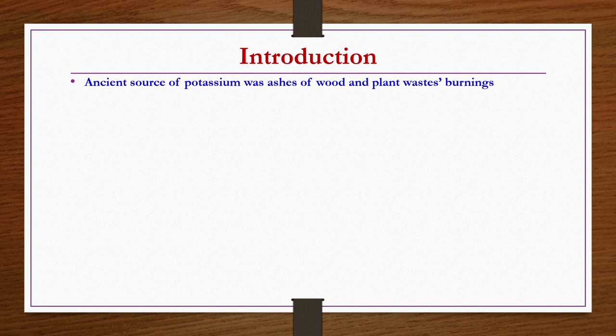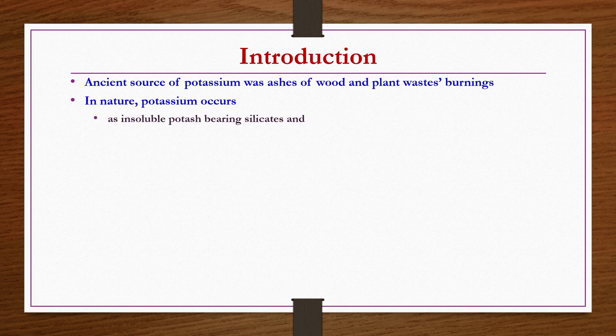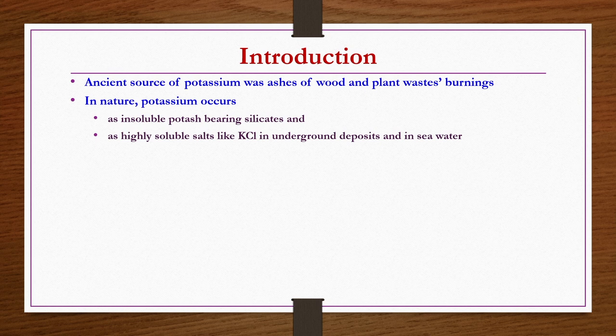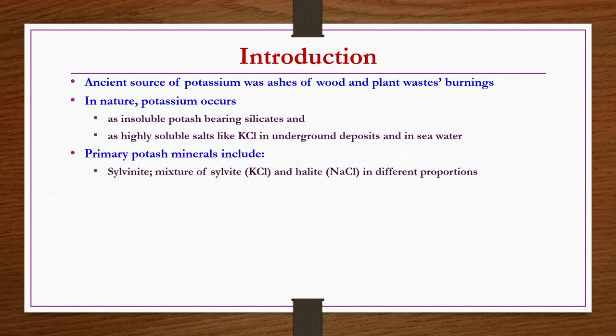How is potassium available in nature? It is available in two different forms: as an insoluble form and as a highly soluble form. For example, as insoluble potassium-bearing silicates, and also as highly soluble salts like potassium chloride in underground deposits and in seawater. Primary potash minerals include sylvanite, which is a mixture of sylvite (potassium chloride) and halite (sodium chloride) in different proportions.